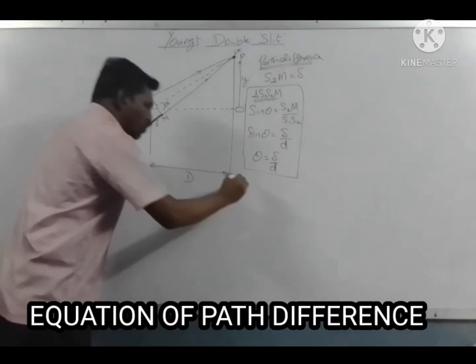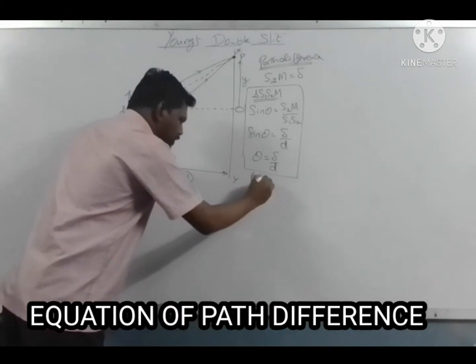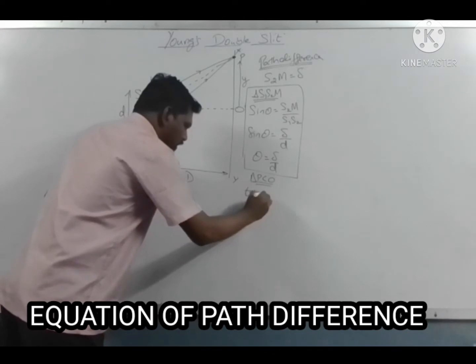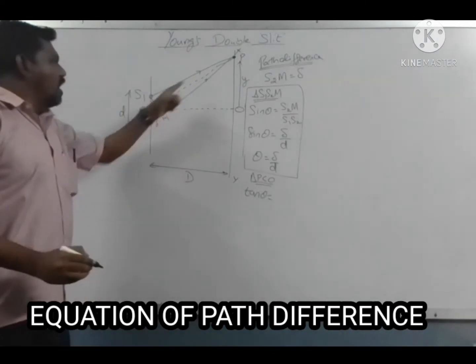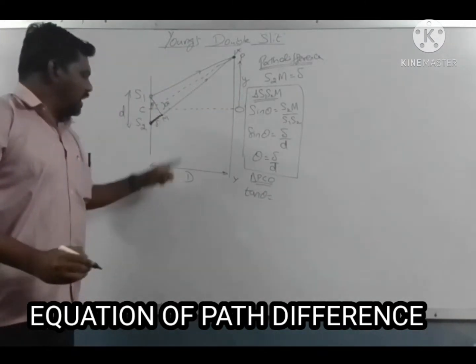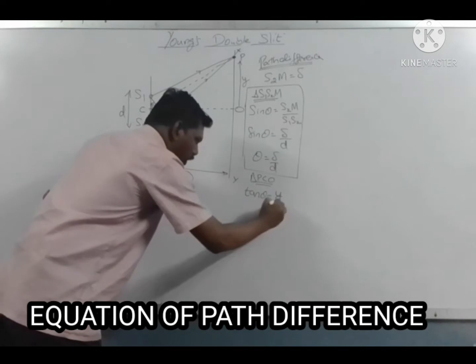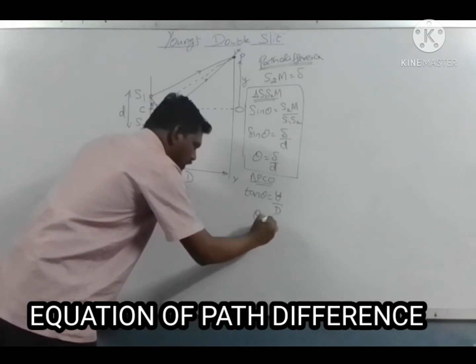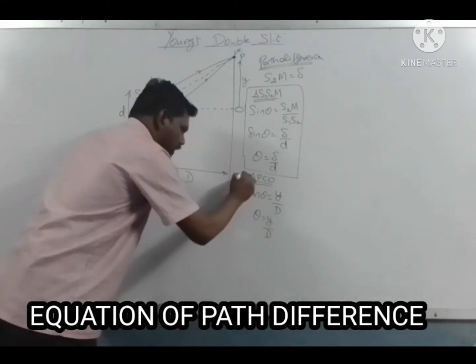From triangle PCO, tan theta equals opposite over adjacent, which gives tan theta equals y over D. For small angles, tan theta is approximately equal to theta, so theta equals y divided by D.